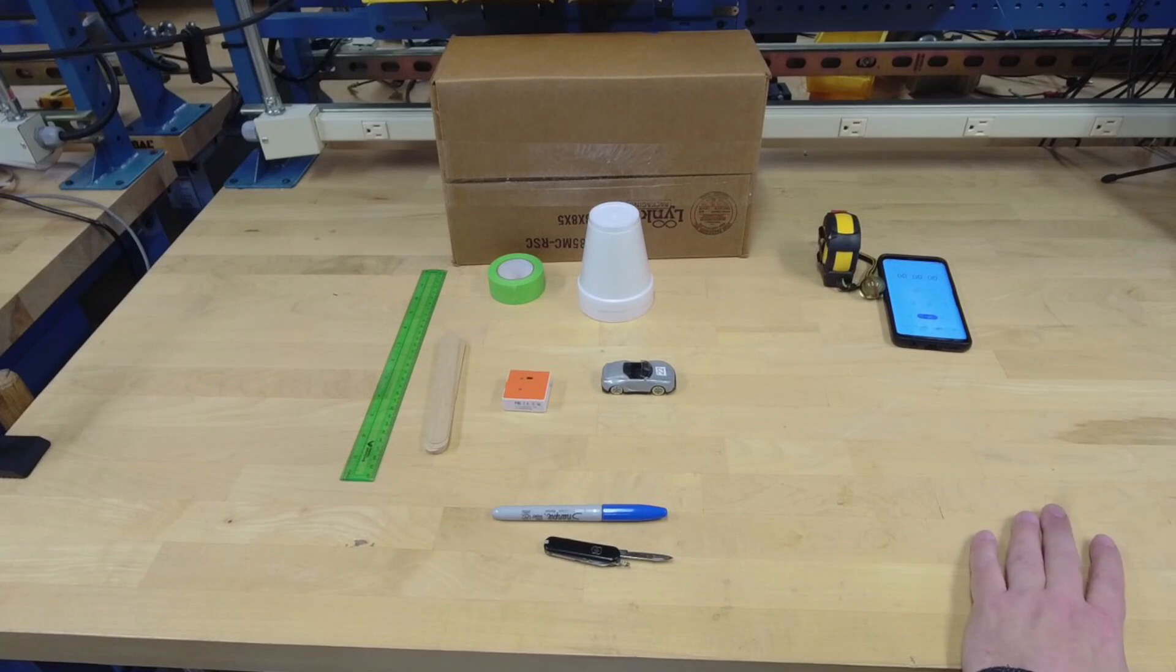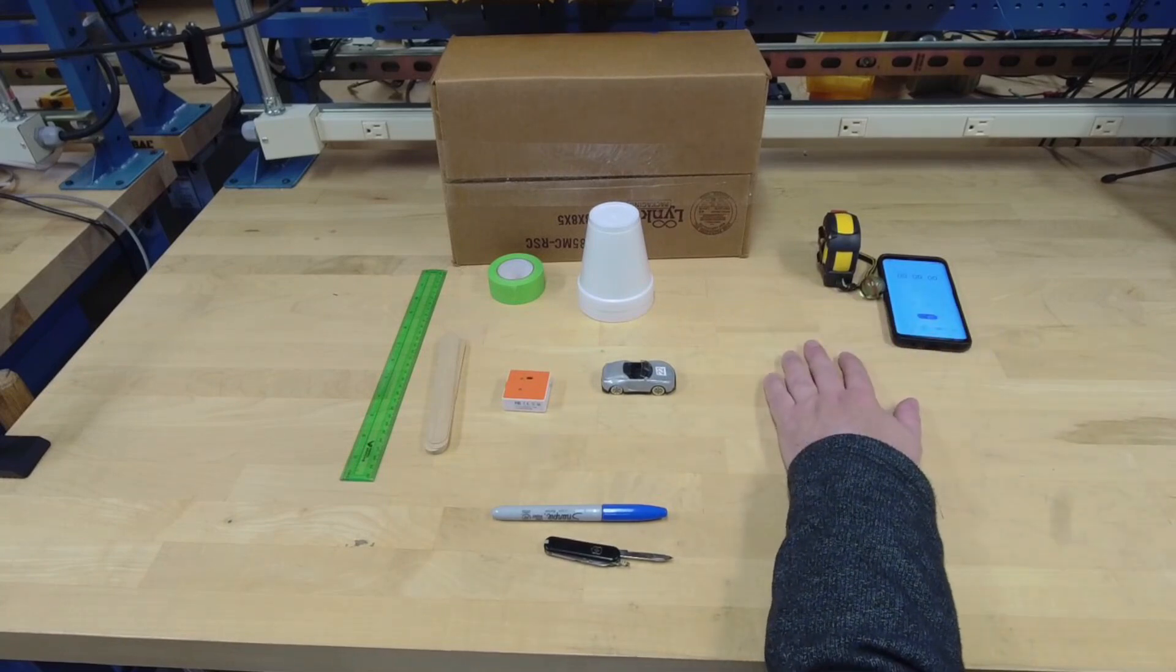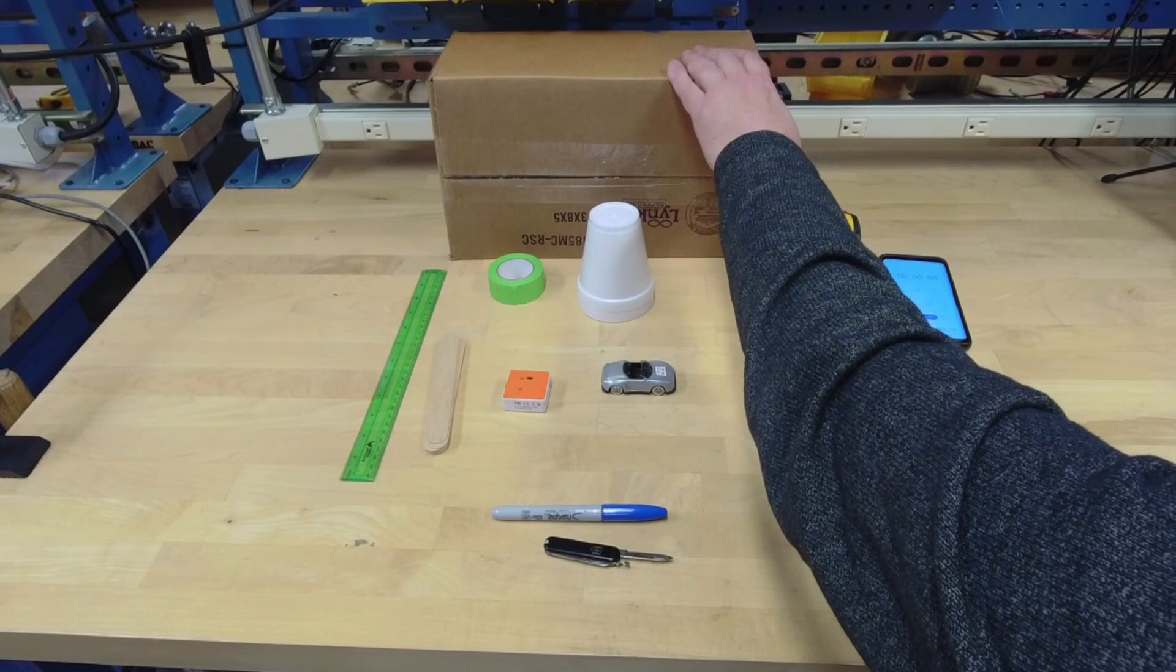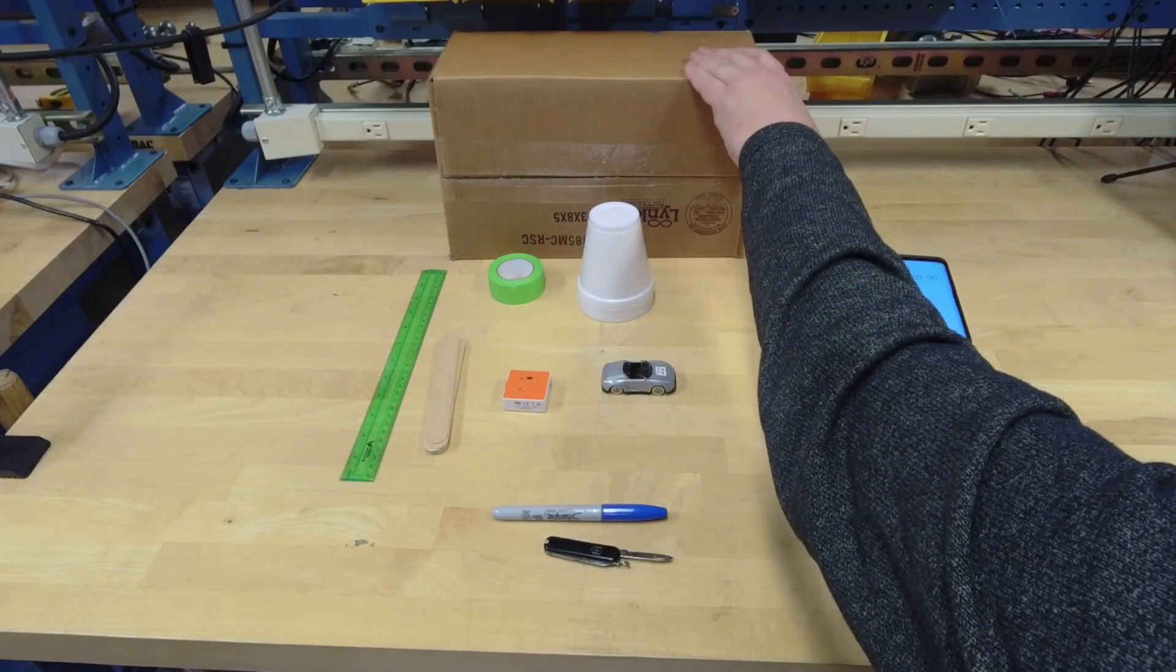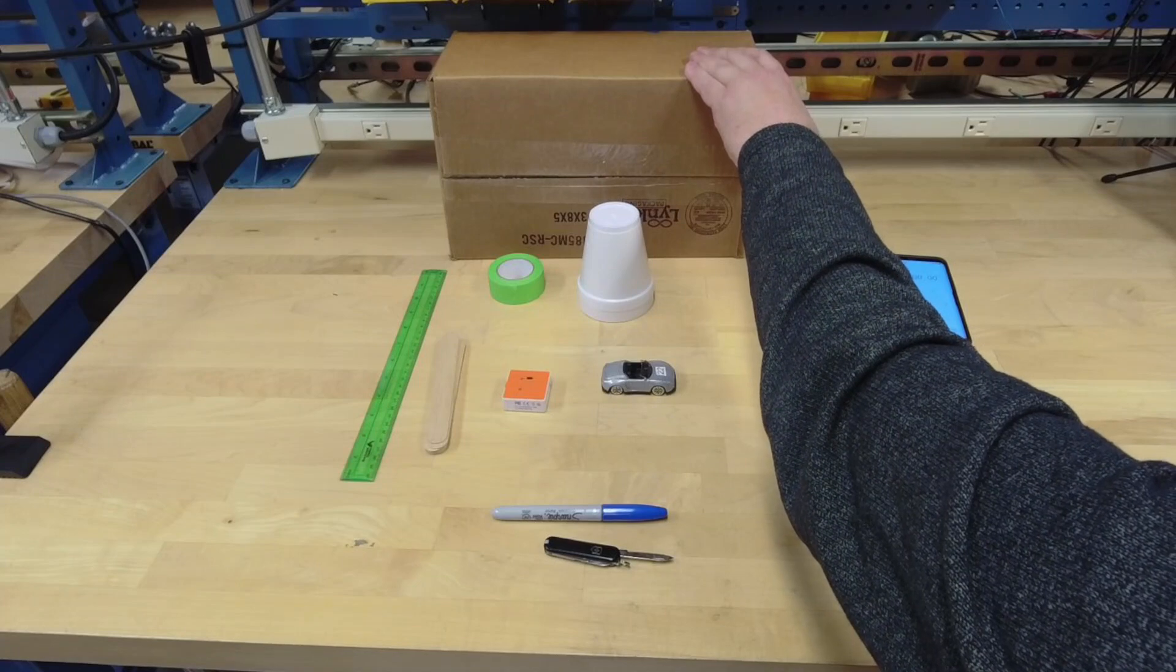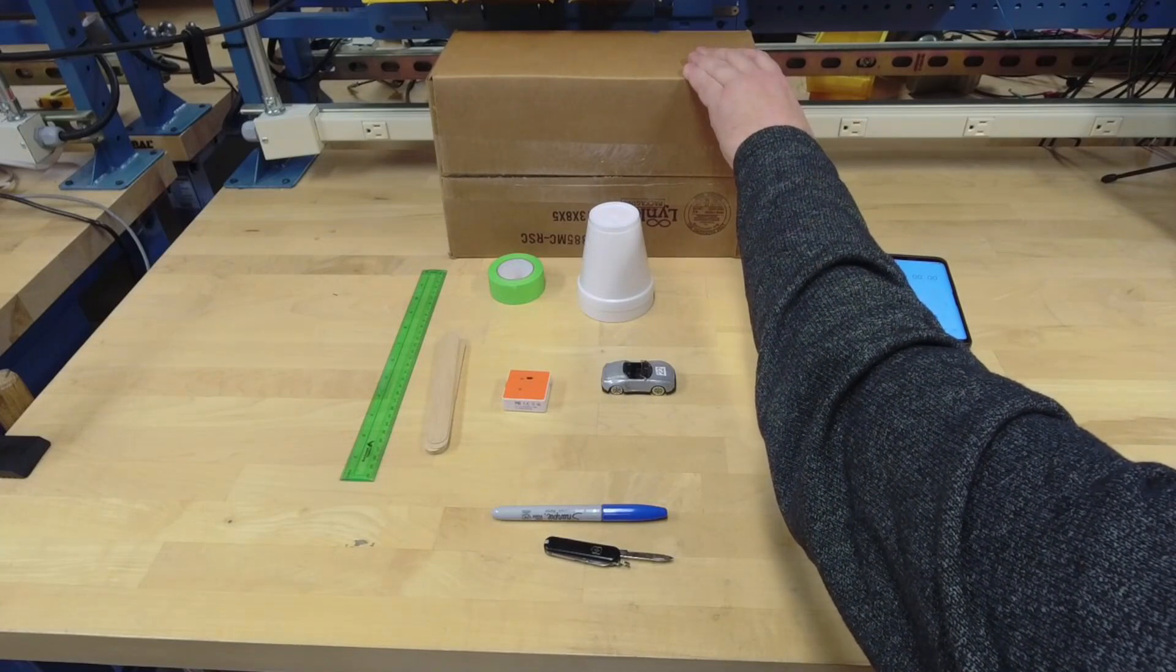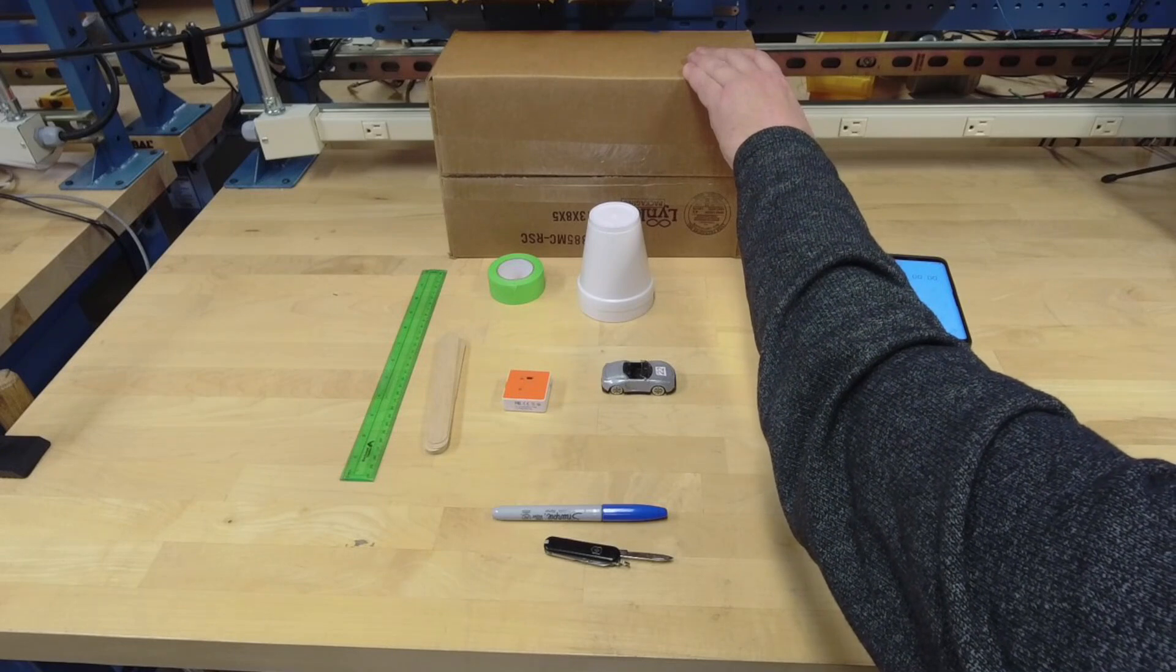For the second part, where we roll the car down the ramp, we'll need some other items. We're going to need the box that your kit was shipped in. We'll cut this apart, so you may want a separate container to keep your lab kit organized.